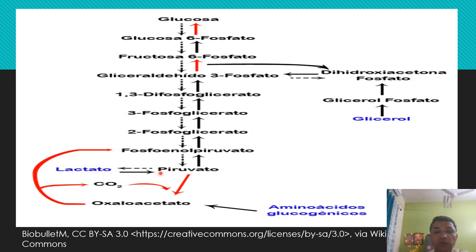The pyruvate molecule, which is the end product of glycolysis, can become lactate in muscles. The relevant intermediate here is the oxaloacetate molecule.